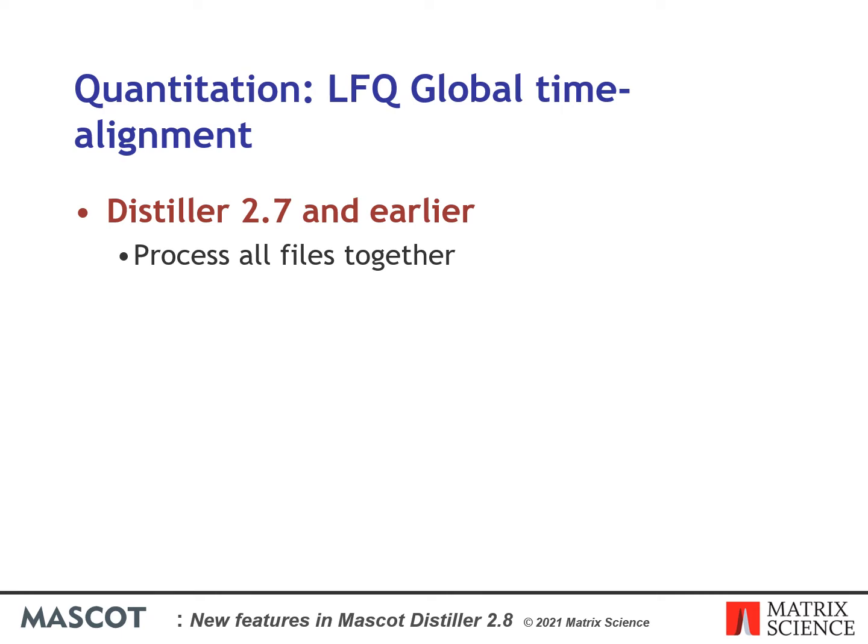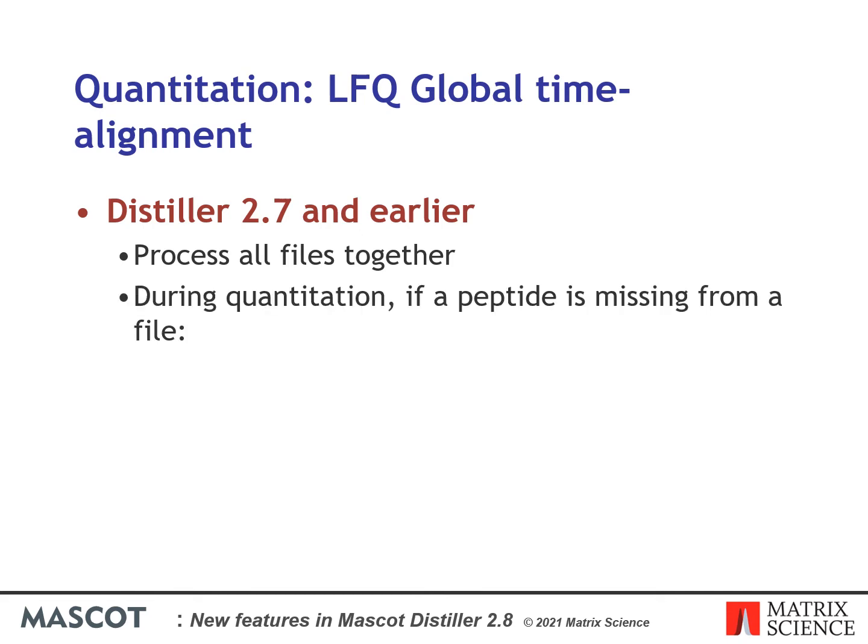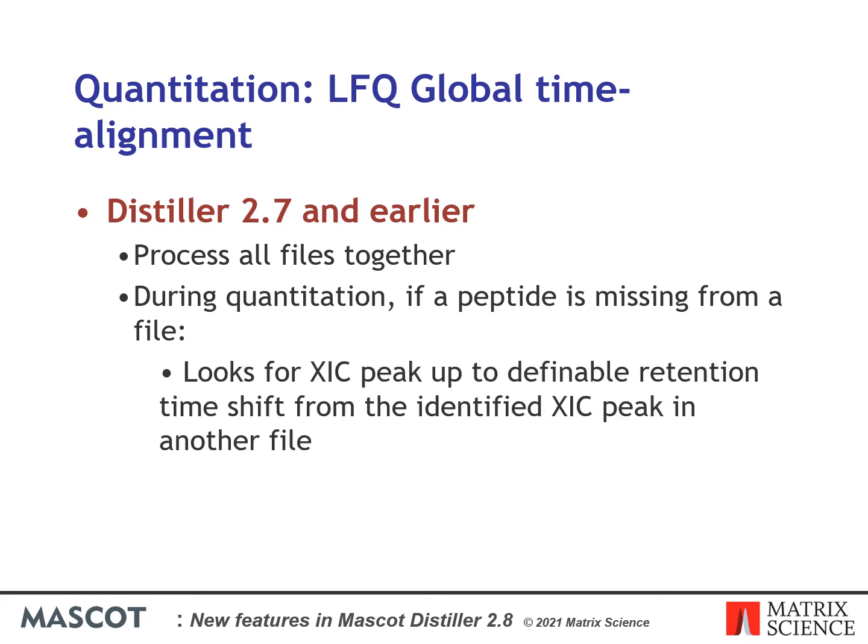This could result in a very large project depending on the number of samples, which could require a very large amount of memory on the workstation. During quantitation, if a peptide identified in one or more raw sample files is missing from another, Distiller simply searches for an XIC peak in that other file starting from the identified retention times from the other files, up to a user-definable limit of 500 seconds by default.